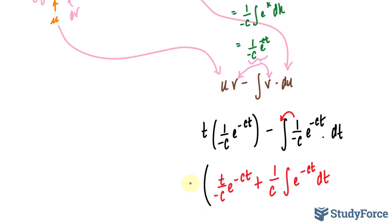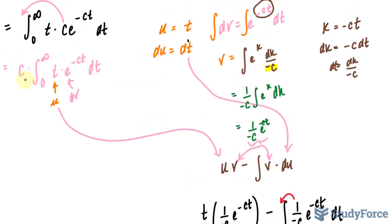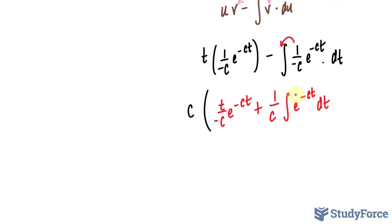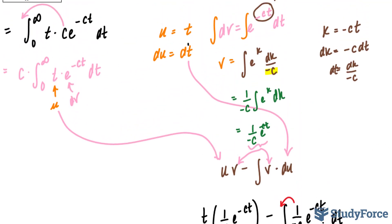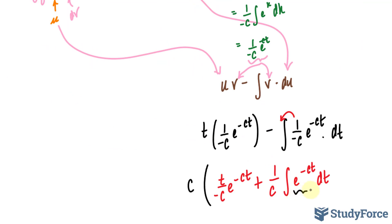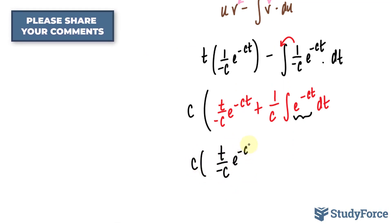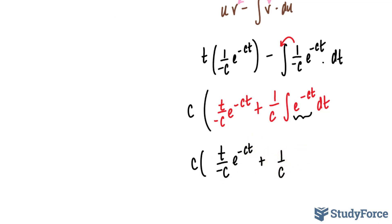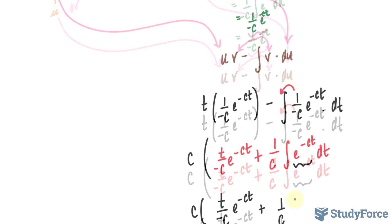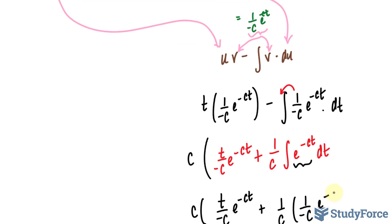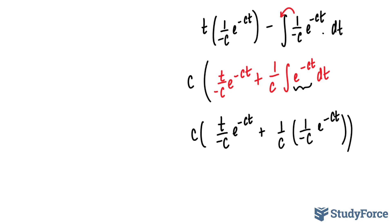Don't forget this expression is being multiplied by the original c that was pulled out. Before multiplying, we integrate the remaining integral using the result from above. This gives c times the quantity: t over negative c times e to the power of negative c t, plus 1 over c times 1 over negative c times e to the power of negative c t. Multiplying c into the first term, c and c cancel, leaving negative t e to the negative c t. Multiplying c into the second term cancels one c, leaving negative 1 over c times e to the power of negative c t.